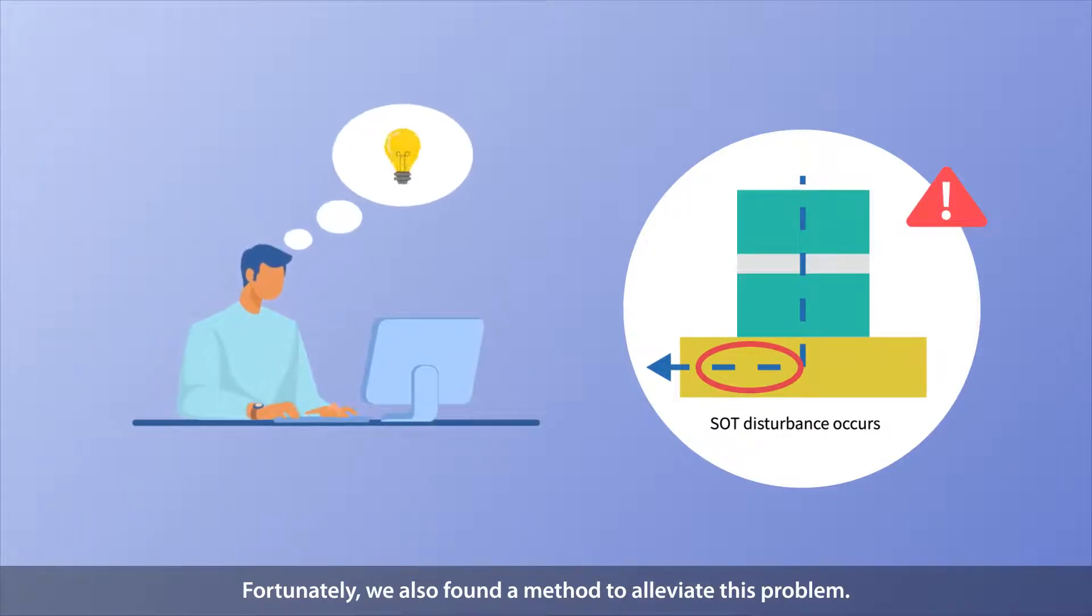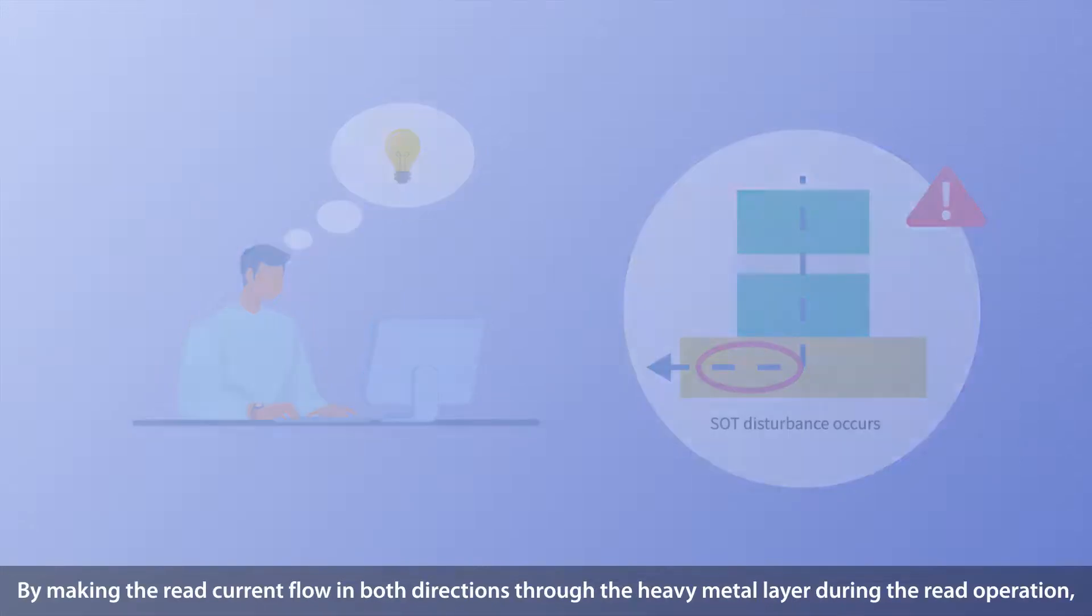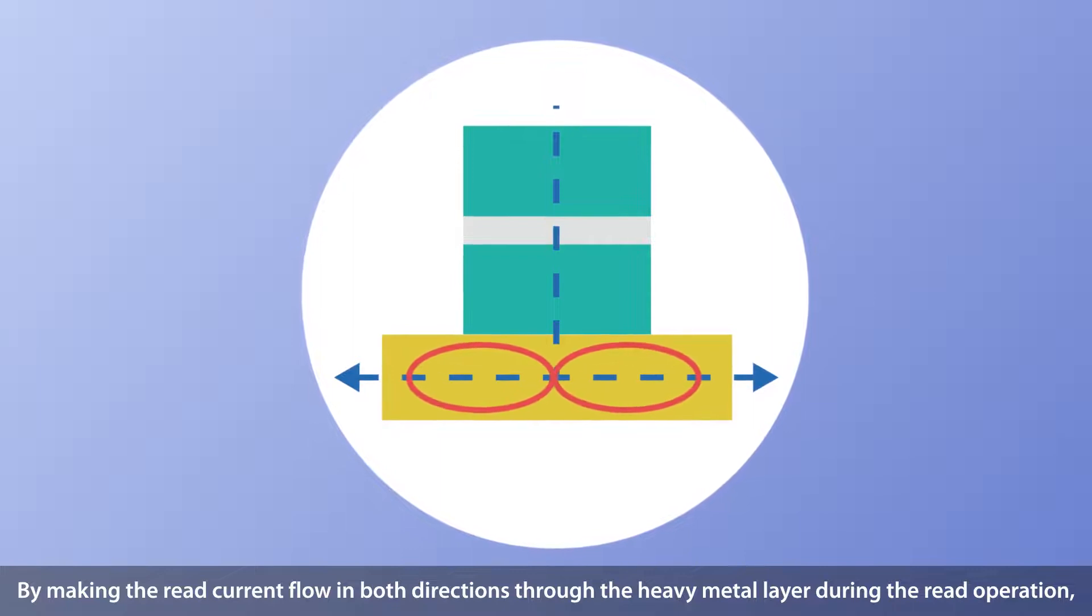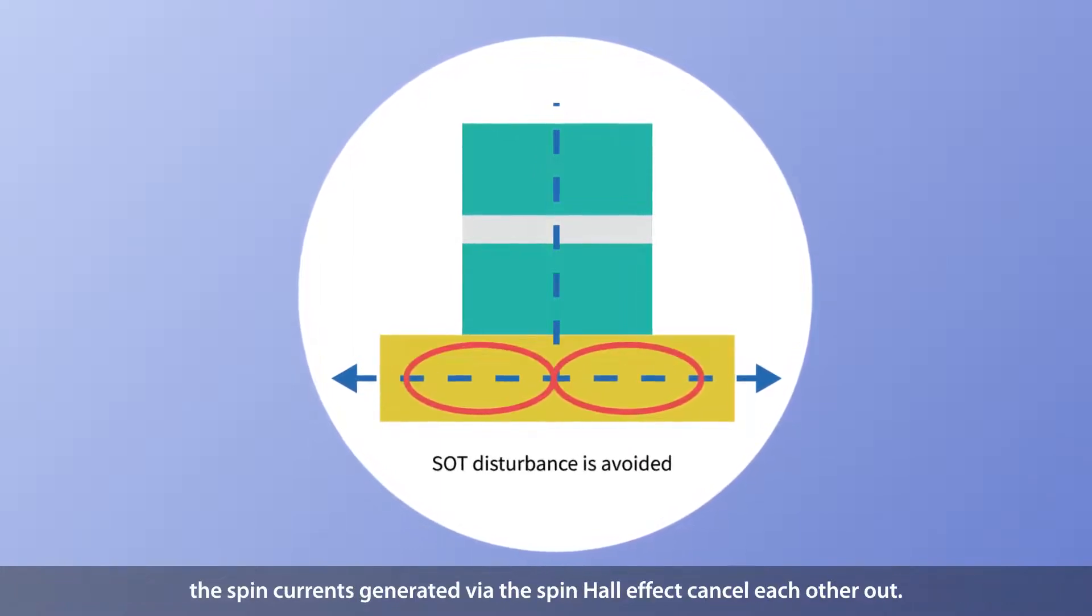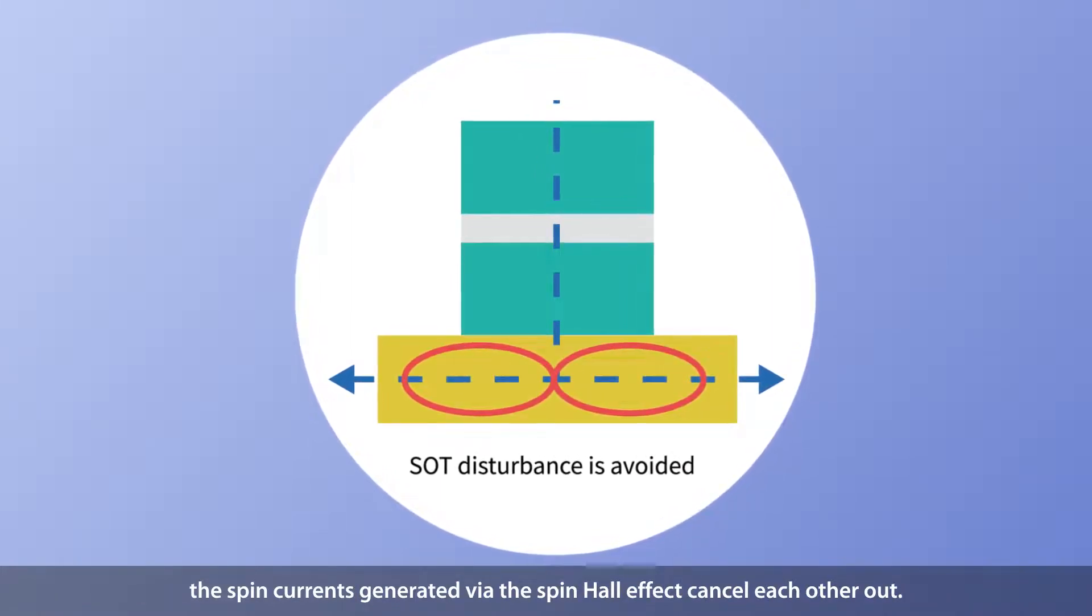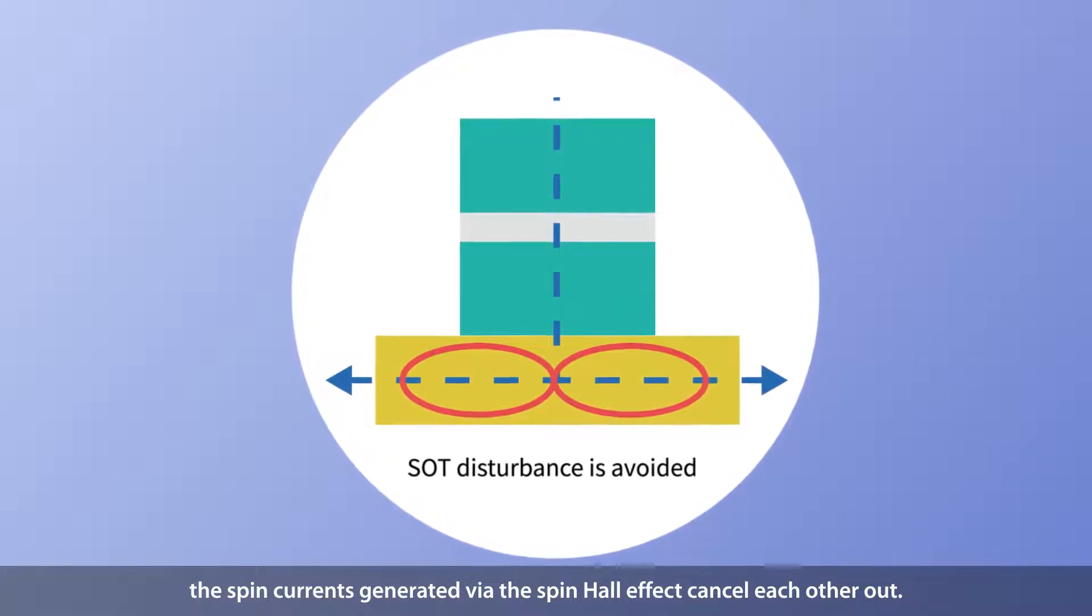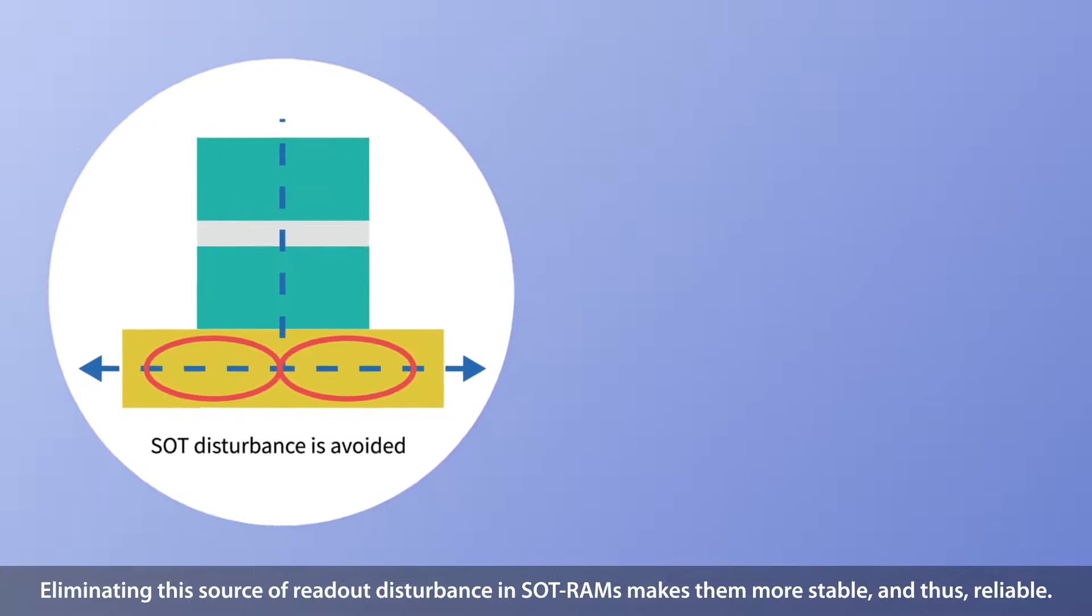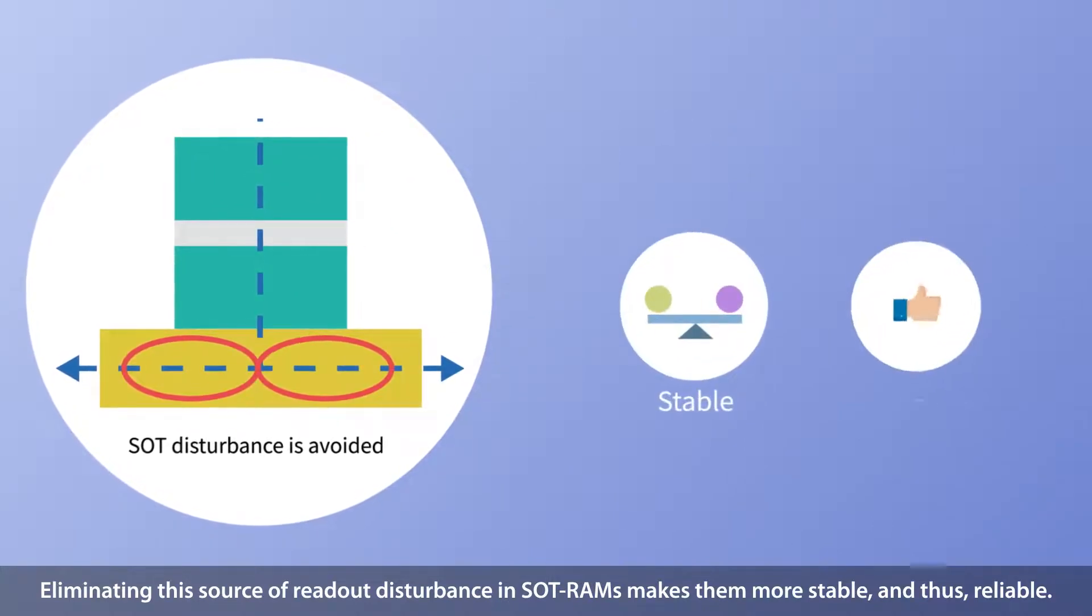we also found a method to alleviate this problem. By making the read current flow in both directions through the heavy metal layer during the read operation, the spin currents generated via the spin-Hall effect cancel each other out. Eliminating this source of readout disturbance in SOT RAMs makes them more stable and thus reliable.